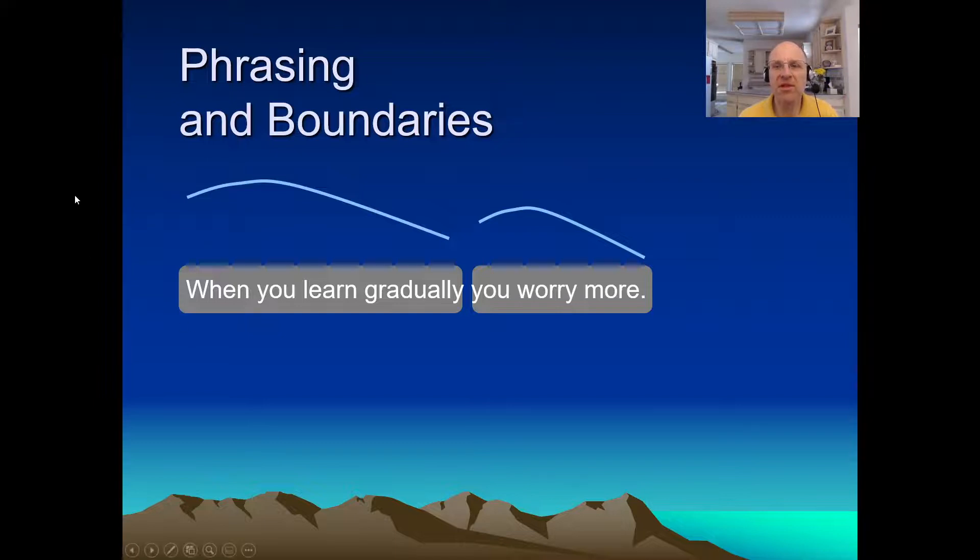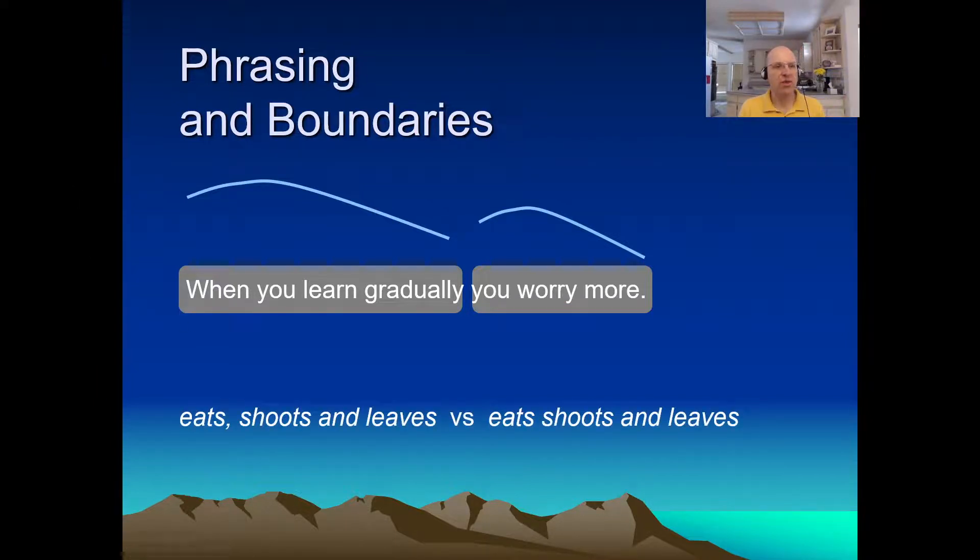Consider the famous example, eats, shoots, and leaves, versus eats shoots and leaves. All right. So there's a little comma there, and it's tempting to say, aha, well, there's a comma, it's a boundary, it's different.